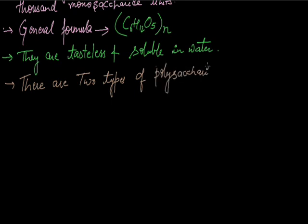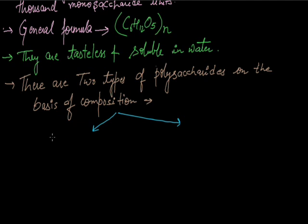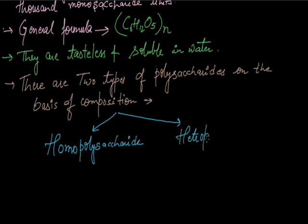There are two types of polysaccharides on the basis of composition. These two types are homopolysaccharide and heteropolysaccharide.